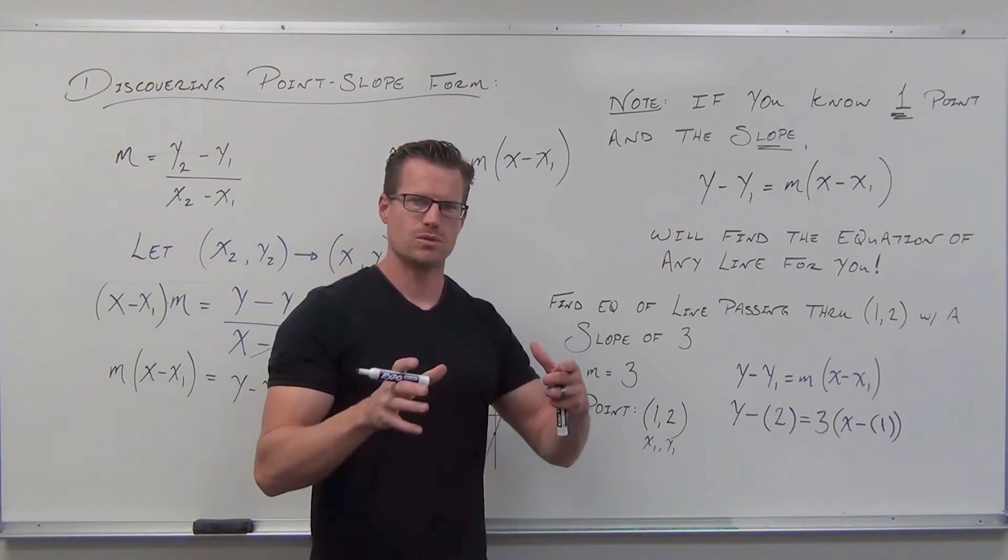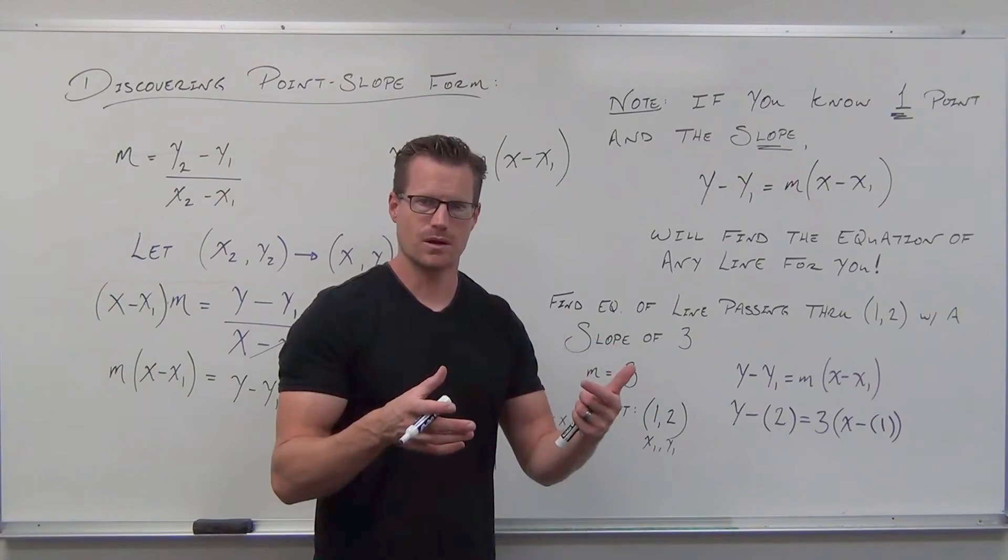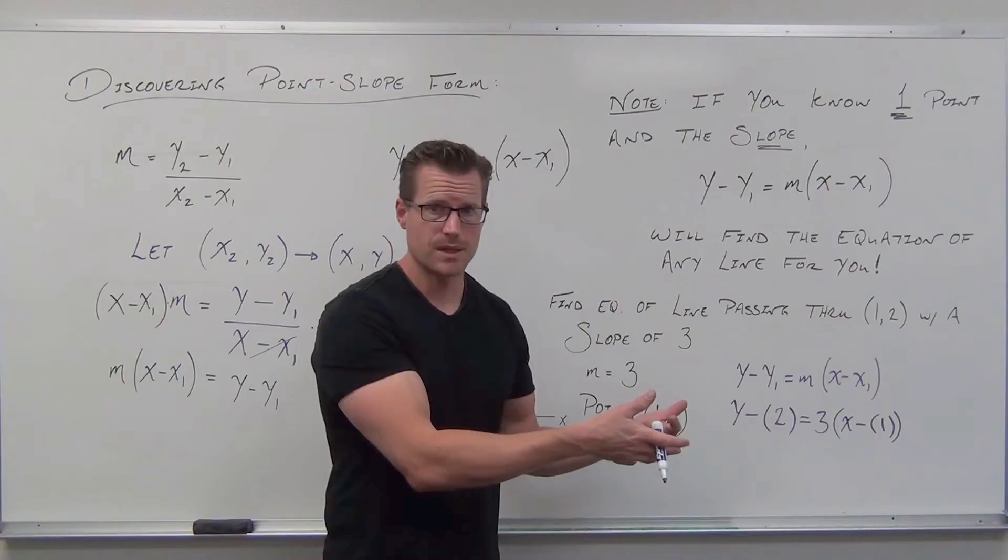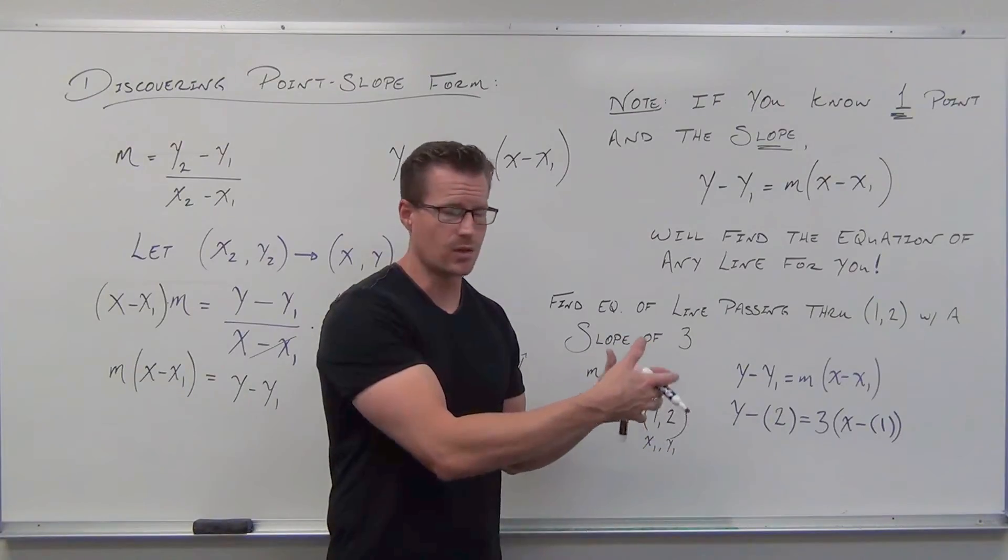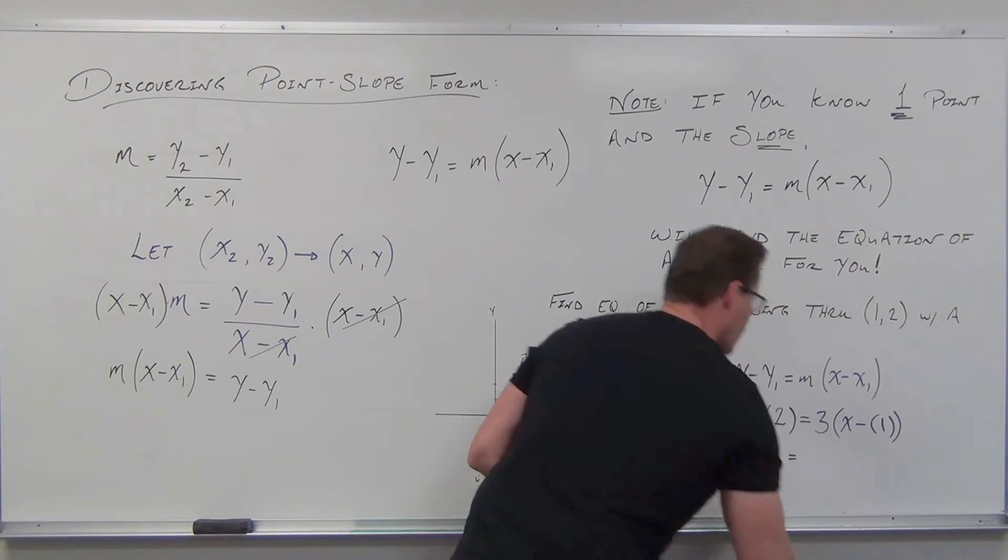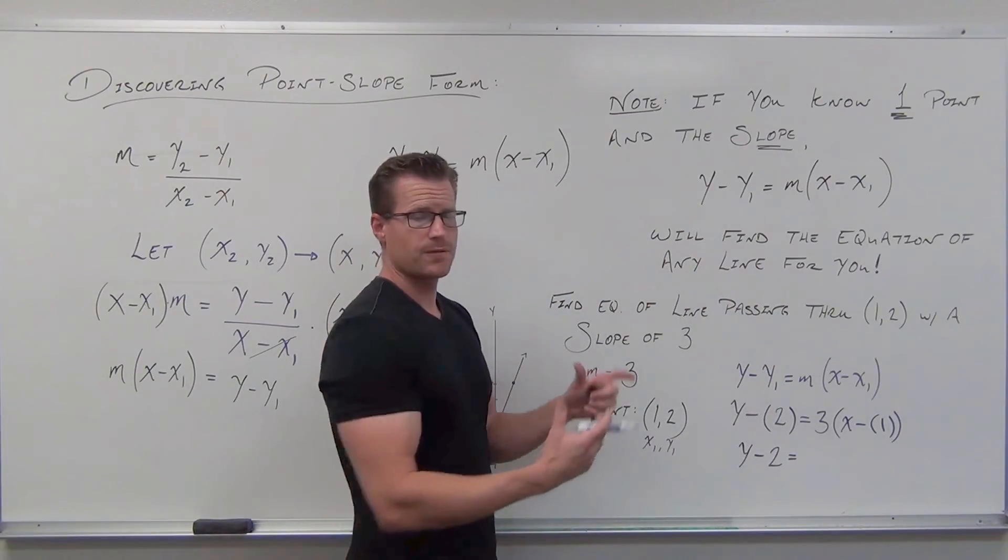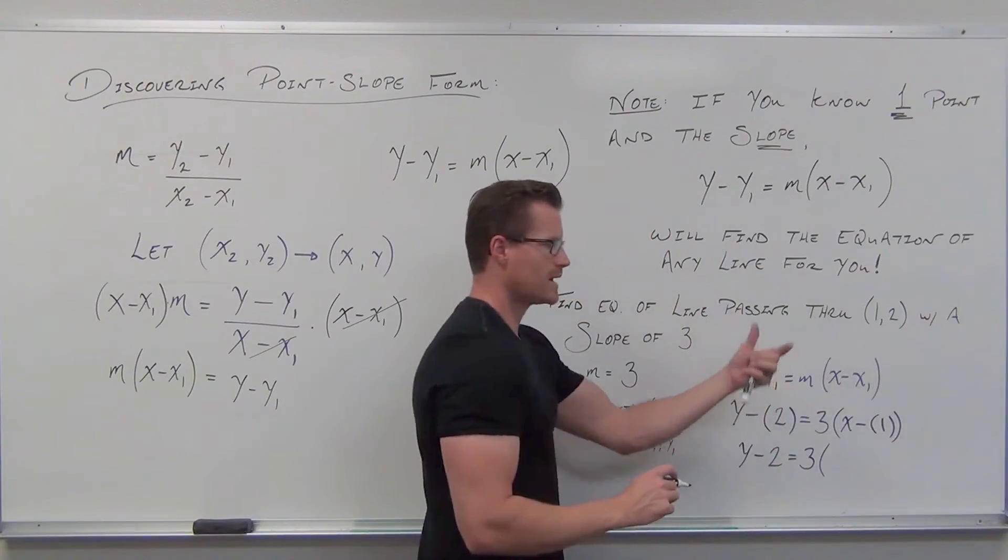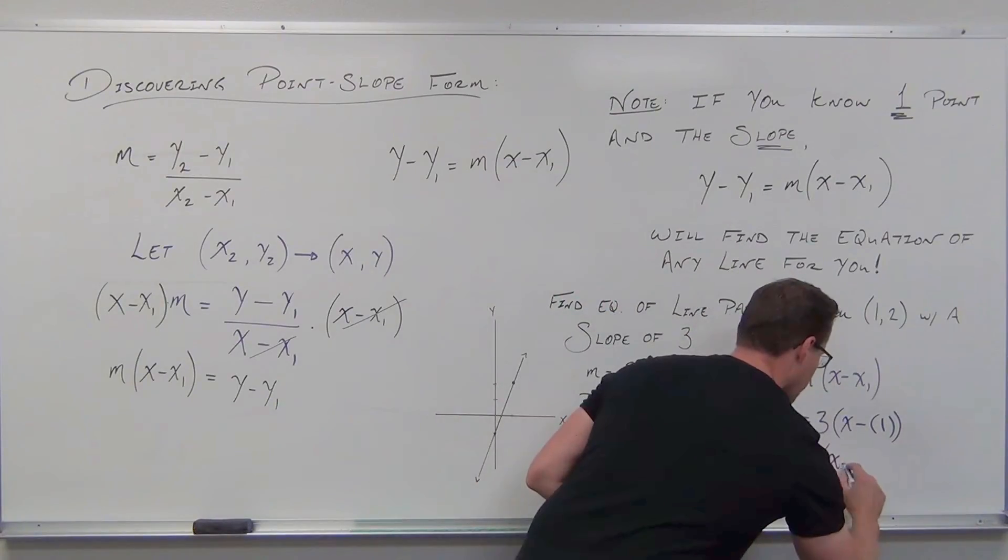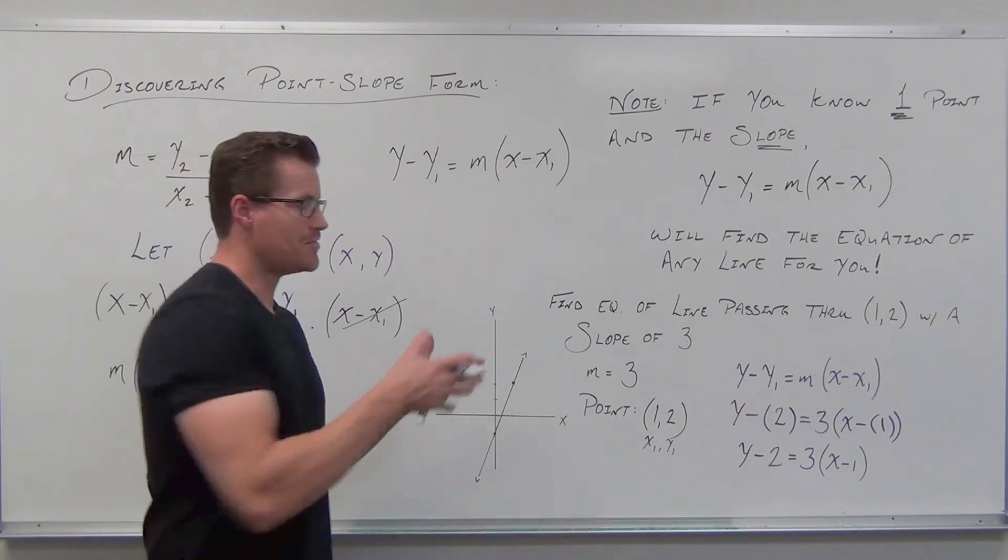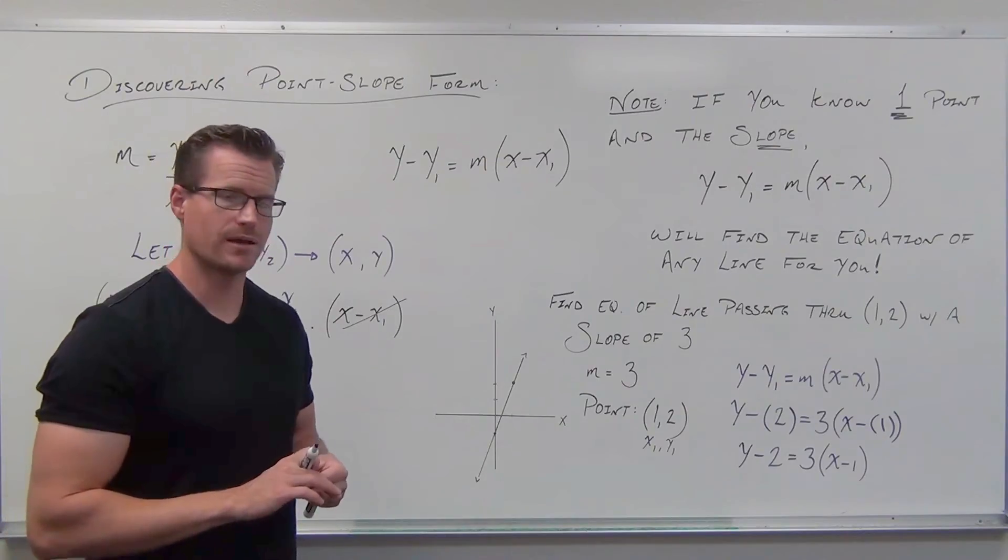Y minus 2, whether those parentheses are there or not, you're still going to do the same thing. That's why we use them all the time. Because when we need them, they're there. When we don't need them, they don't hurt us. On the right-hand side, go slow. Fix the inside of your parentheses first. X minus 1, no problem. Now, that right there, that is the point-slope form of a line. You're done.